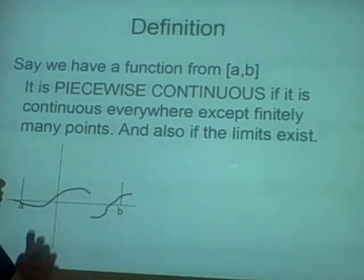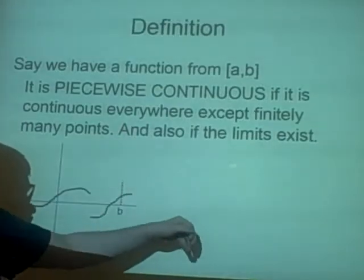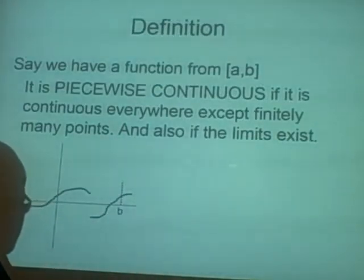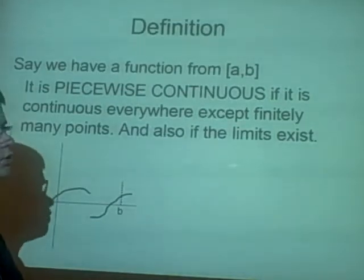So say, this is an example of a piecewise continuous function. Say we had a function 1 over n, and n is any integer, any positive integer for example. We were finding the limits at minus 2, 1, and minus 2 doesn't exist as a limit, so that's not piecewise continuous.